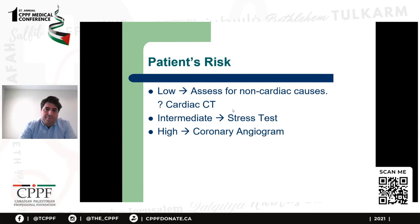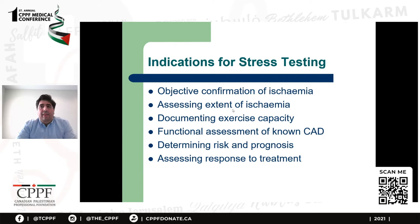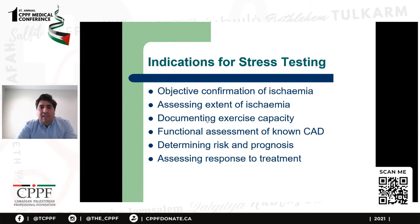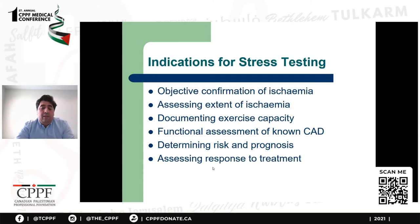If the risk is in the intermediate range — somewhere from 10 to 90 percent — doing a stress test will help you further risk stratify and decide if the patient's pain is related to coronary artery disease. There are several indications for stress testing: to confirm symptoms are related to ischemia, to assess the extent of ischemia especially when planning medical management, to document exercise capacity, as a functional assessment in patients with non-coronary artery disease, to determine risk and prognosis, and to assess response to treatment.